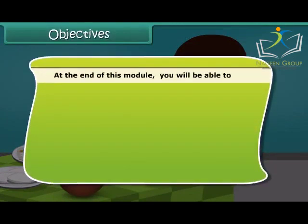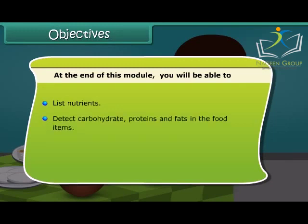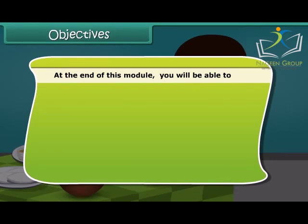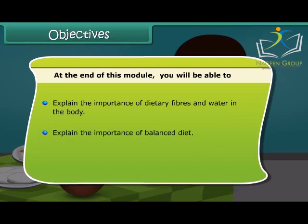Dear friends, at the end of this lesson, you will be able to list nutrients and detect carbohydrates, proteins and fats in food items. You will also be able to describe different vitamins with their roles and discuss the importance of minerals in the body. In addition, you will be able to explain the importance of dietary fibers and water in the body, explain the importance of balanced diet and define deficiency diseases.